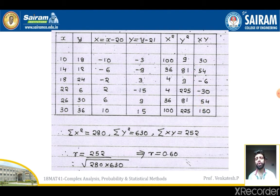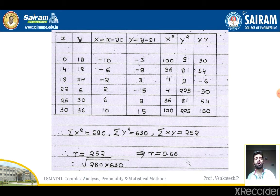Now to estimate the correlation coefficient: ΣX² = 280, ΣY² = 630, ΣXY = 252. Incorporating these values into the R formula: R = 252 / sqrt(280 × 630). On simplifying, R = 0.60.